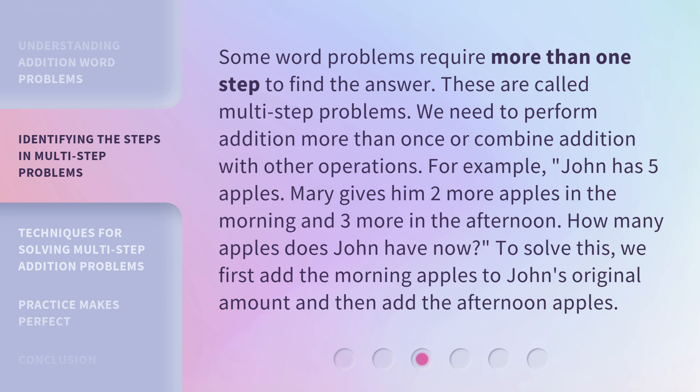For example: John has five apples. Mary gives him two more apples in the morning and three more in the afternoon. How many apples does John have now? To solve this, we first add the morning apples to John's original amount, and then add the afternoon apples.